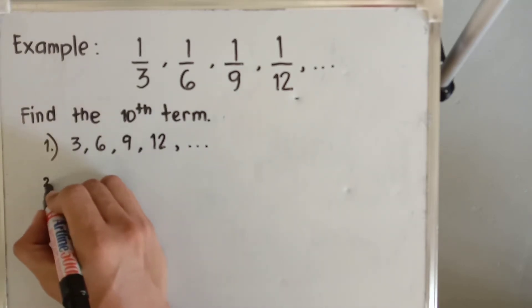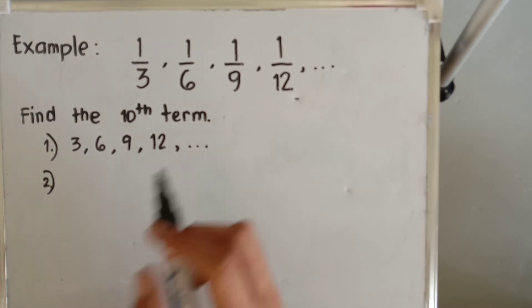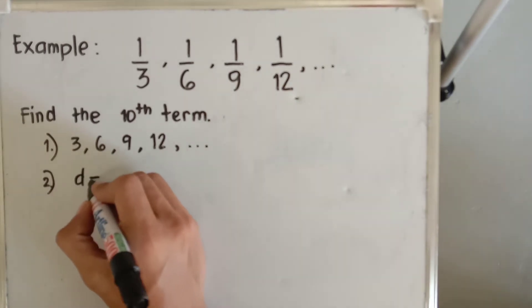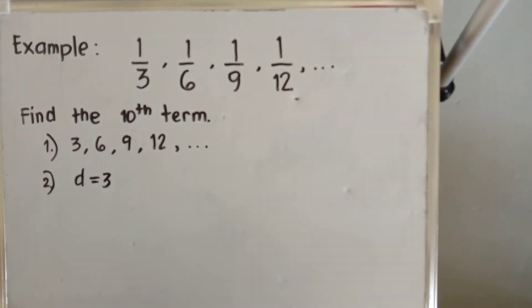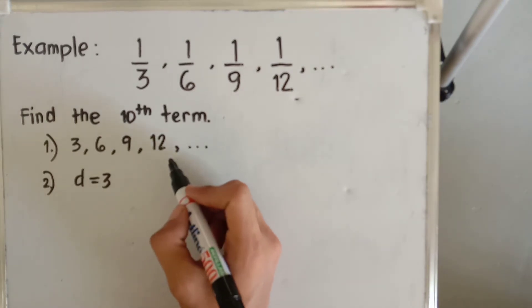The second step is to identify the common difference. We already identified the common difference of this given sequence, and that is the common difference is equal to three. After finding the common difference, we can now find the tenth term using the arithmetic sequence formula.